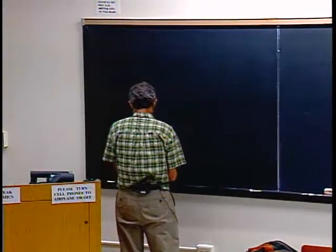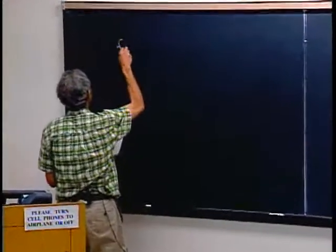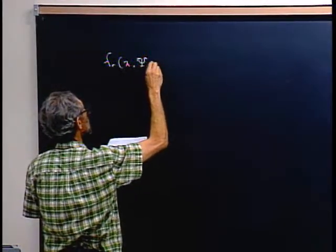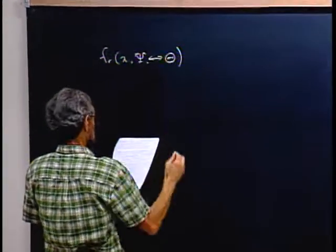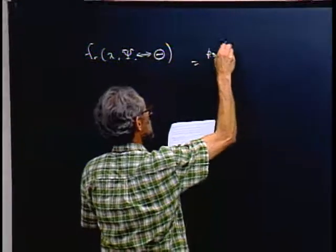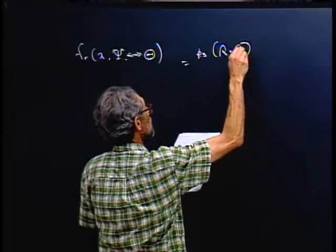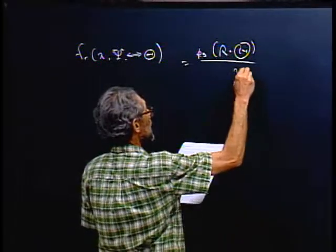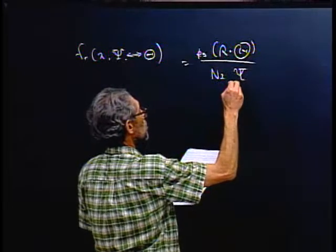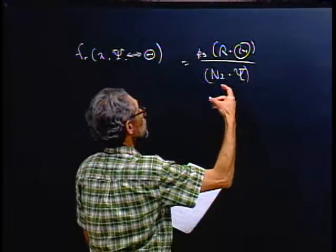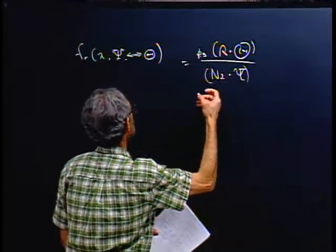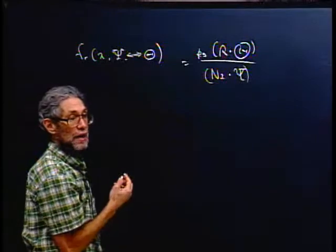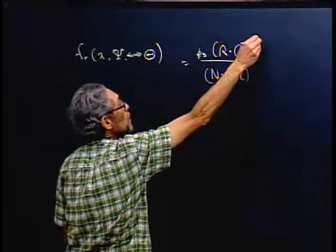If we consider the Phong BRDF, here's ψ and here's θ. That was K_s — some specular coefficient — times the difference between θ and the perfect reflection of the incoming ray. ψ is the incoming ray and this is the surface normal. The reason this is in the denominator is because the Phong formulation had the cosine term — this dot product — multiplied by the BRDF, and his formula was just like this with some exponent n.